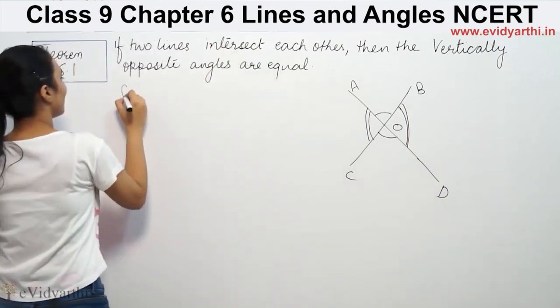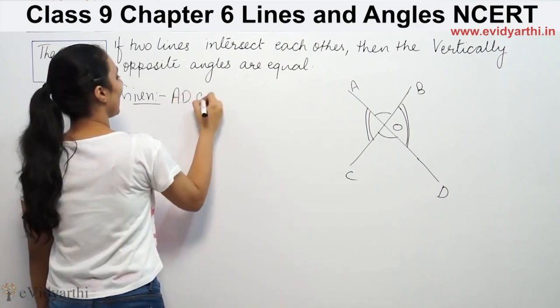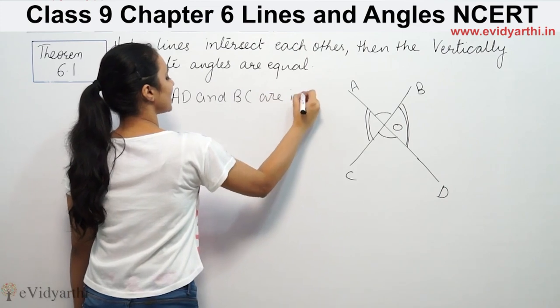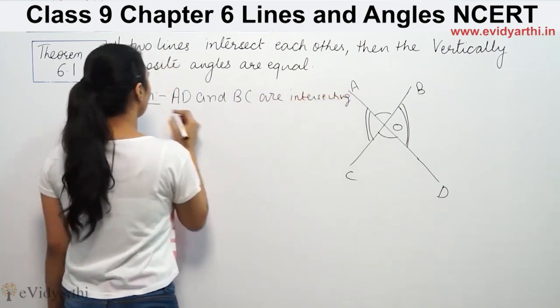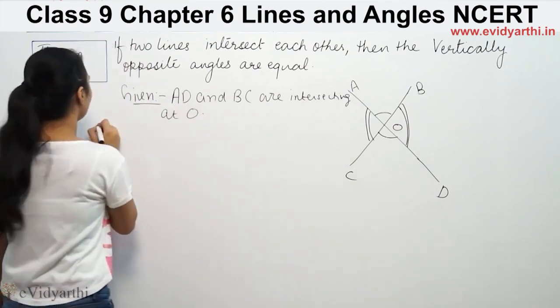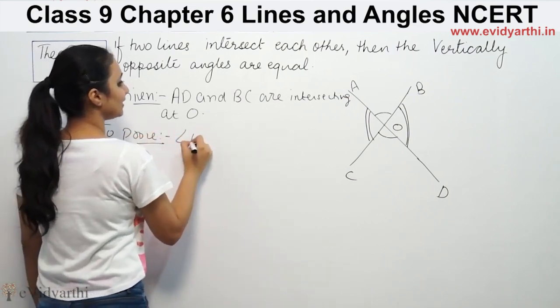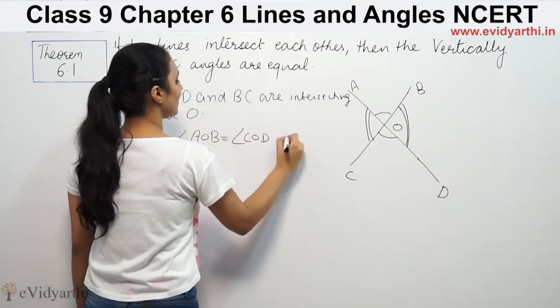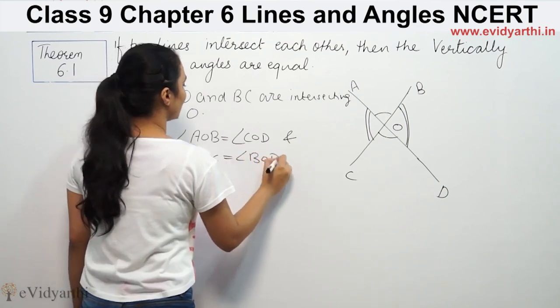So, we have to prove that AB and BC are intersecting at O. We have to prove that angle AOB is equal to angle COD and angle AOC is equal to angle BOD.